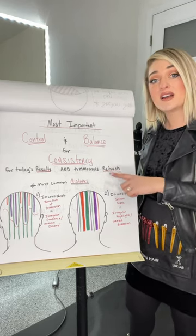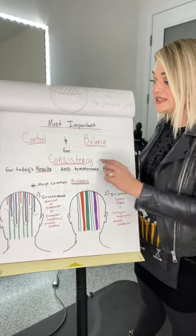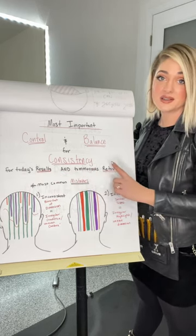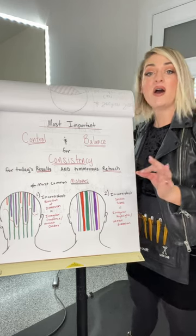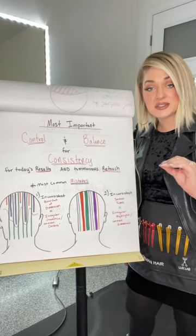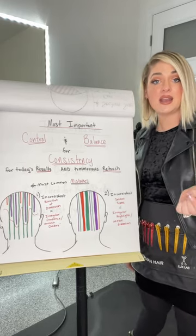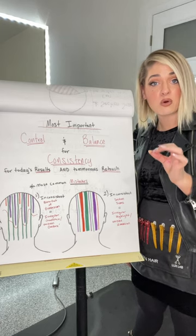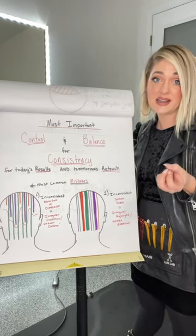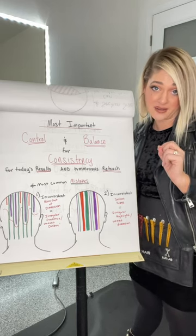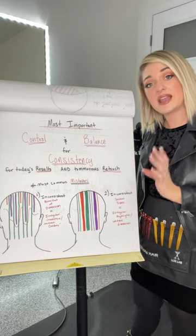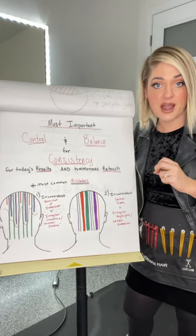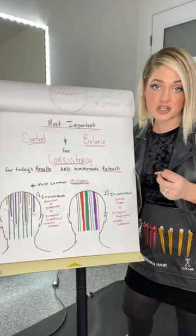You need consistency not only for today's results, but also for tomorrow's retouch. It's hard enough to do a great job the first time, but then the next time they come in, picking up the same exact hairs and only retouching at the root area to avoid overlapping on previously highlighted hair and causing breakage — that's the hardest thing. If you have control in the application to create the balance, you can repeat it the next time, making retouches more accurate and creating more long-term health in your client's hair.